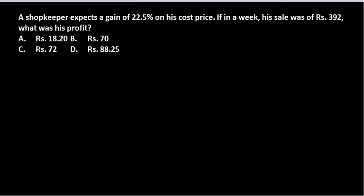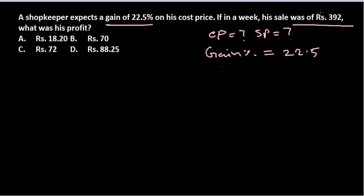Welcome back guys, now let's solve this problem. A shopkeeper expects a gain of 22.5% on his cost price. If in a week his sale was Rs. 392, what was his profit? Here it says a gain percentage is provided, so you need to find it. Remember, I am sticking to my principle: finding cost price first. Once you find the cost price and you get the sale price, the question is telling you the gain percentage, which is 22.5, and the sale of Rs. 392.